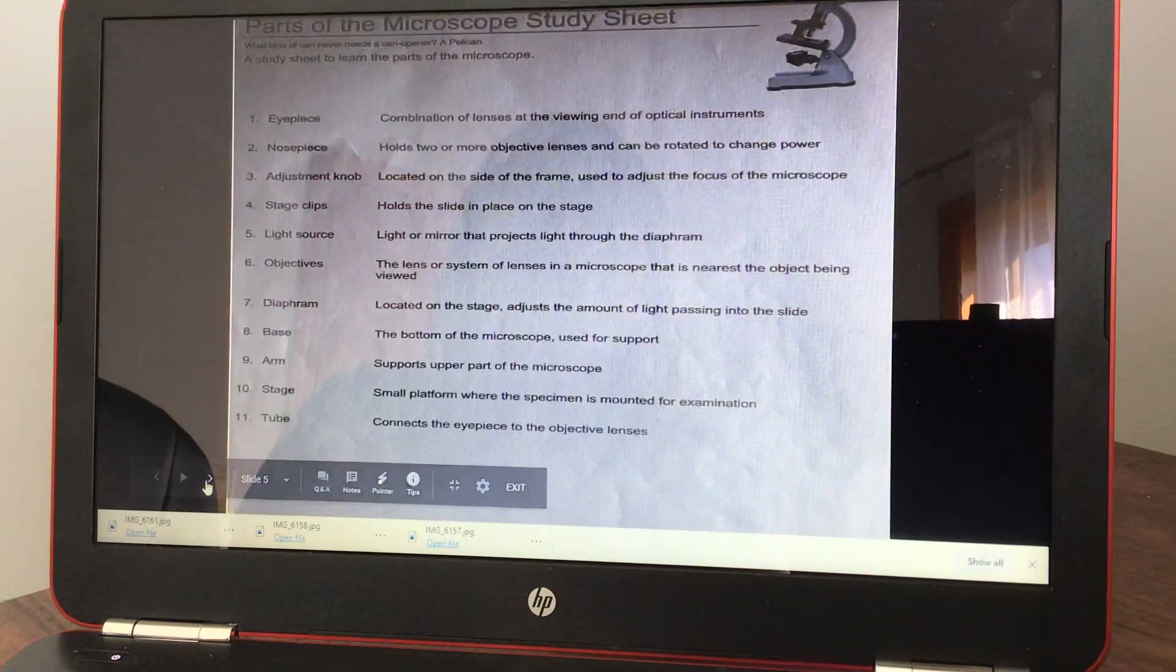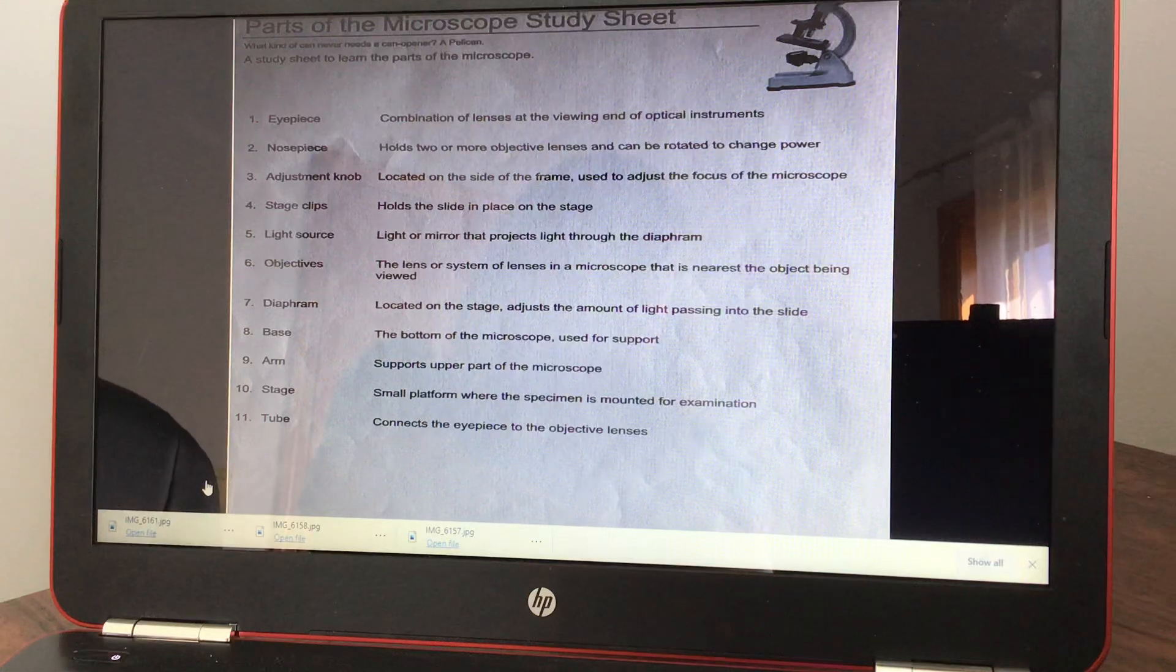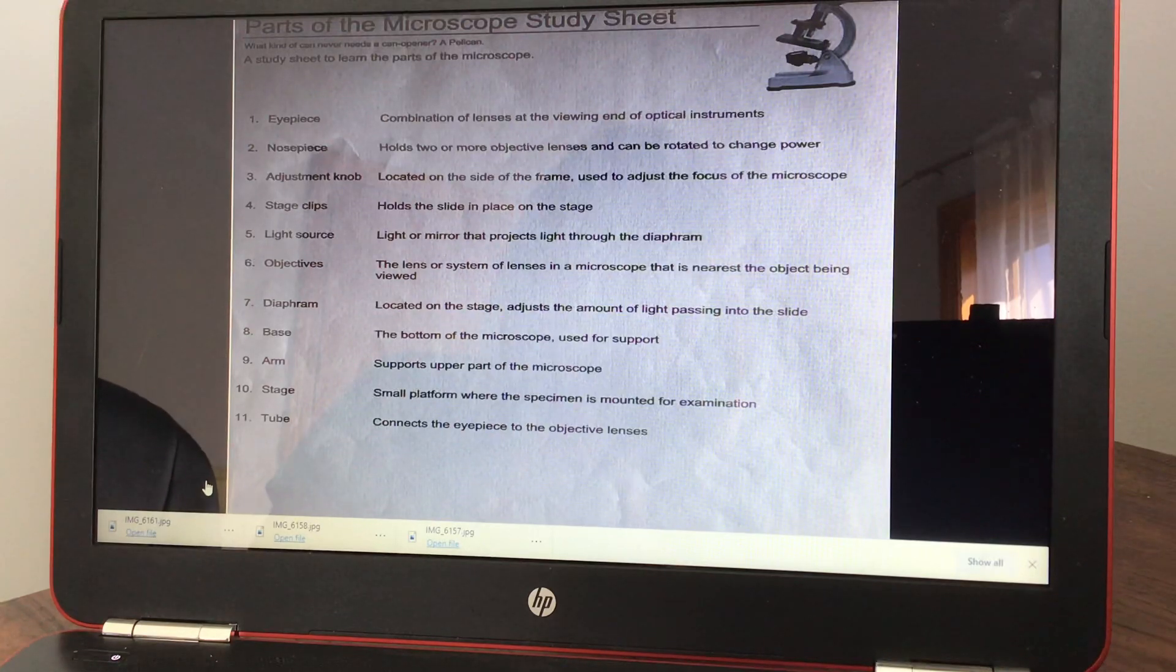Okay, and this sheet is a study sheet for the microscope. Number one, it tells you what an eyepiece is: combination of lenses at the viewing end of optical instruments. Number two, nosepiece: holds two or more objective lenses and can be rotated to change power.